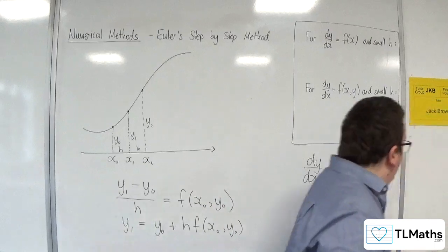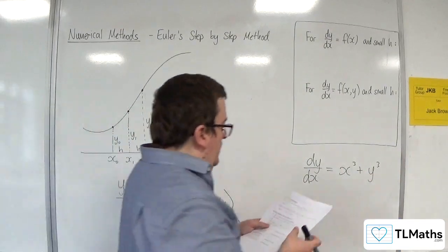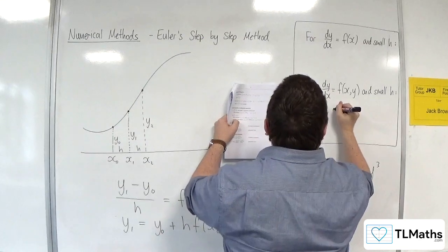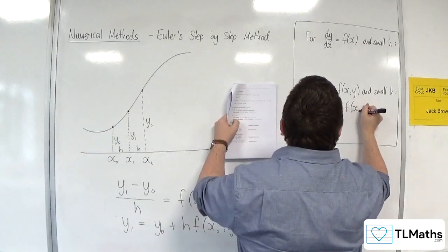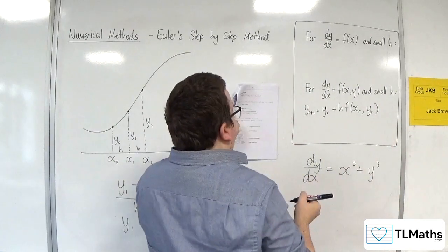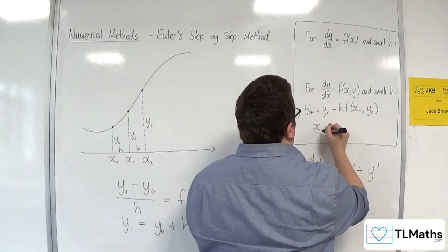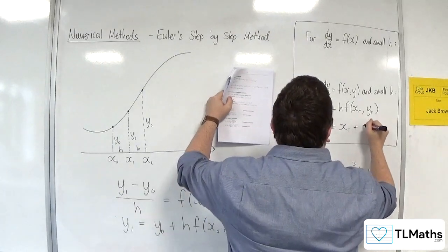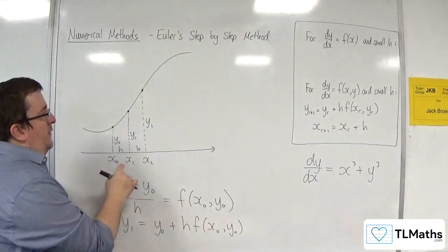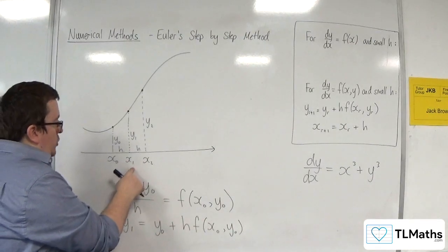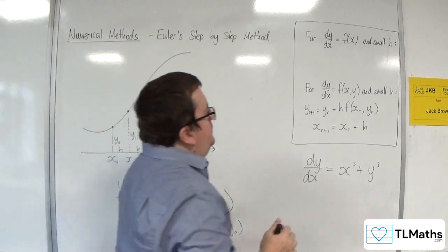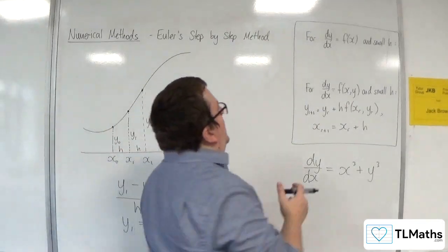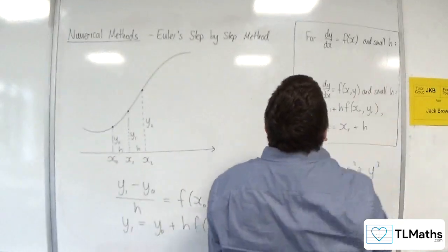So, this is where the formula comes from, and it's in the AQA formula booklet. So, for this, we've got y r plus 1 is equal to y r plus h f of x r y r. Okay? Where we can get the next step so that x r plus 1 is your x r, your previous one, plus h. So, all that's saying is that to get x1, I need to do x0 plus h. And to get x2, I need to do x1 plus h.